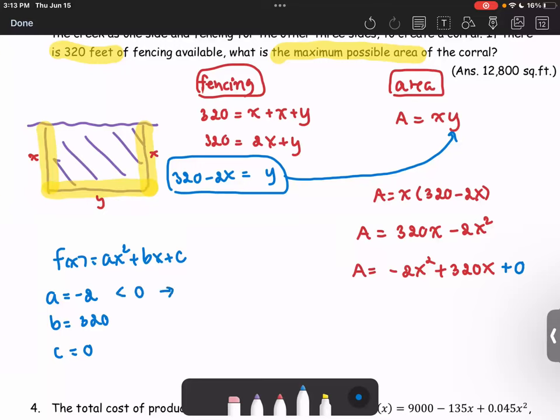So then the vertex (h, k) is going to be the maximum point of the graph. That's what we are looking for as a maximum area. Next, we're going to find the vertex (h, k).